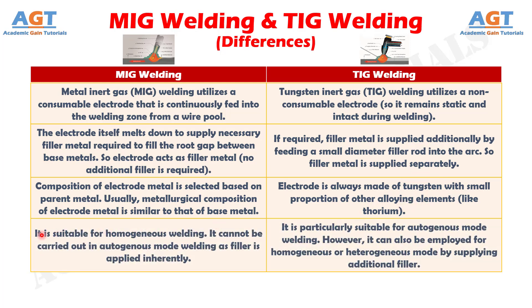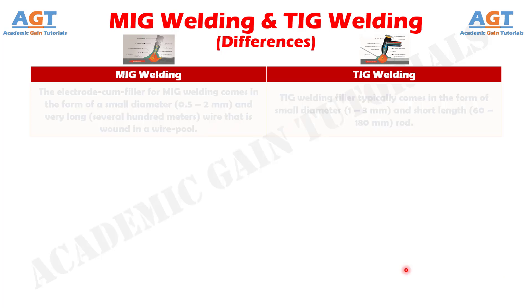Number 4: MIG welding is suitable for homogeneous welding. It cannot be carried out in autogenous mode welding as filler is applied inherently, whereas TIG welding is particularly suitable for autogenous mode welding. However, it can also be employed for homogeneous or heterogeneous mode by supplying additional filler.